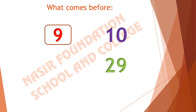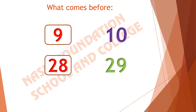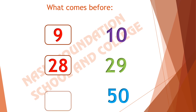Here we have 29. What number will we get before 29? Subtract 1 from 29, what will we get? We will get 28. Before 29 we get 28. Here we have 50. Subtract 1 from 50 and tell me the answer. Before 50 it comes 49.